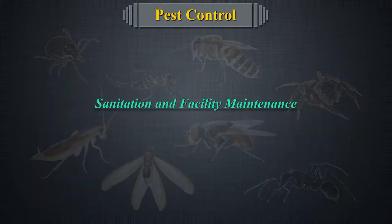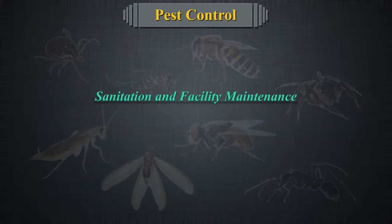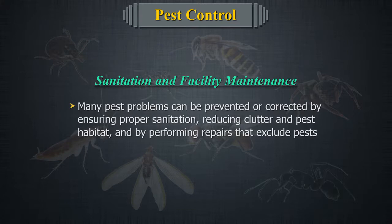Sanitation and facility maintenance. Many pest problems can be prevented or corrected by ensuring proper sanitation, reducing clutter and pest habitat, and by performing repairs that exclude pests.